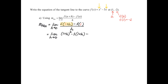Then we subtract the next part of the difference quotient, which is f(1). f(1) is already done for us — we know the output. When x equals 1, the output is negative 2. So you really don't need to do that work if that y value is given to you. We subtract negative 2, and then divide all of this by h.